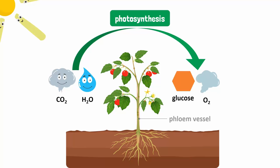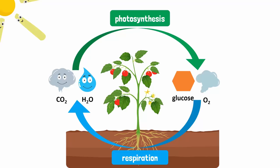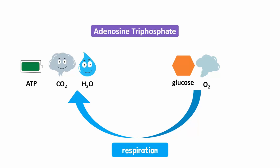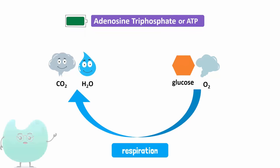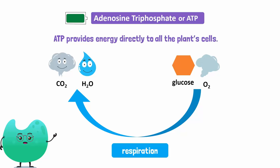When these parts need energy, respiration takes place and the glucose is broken down by oxygen. This reaction releases carbon dioxide and water. The energy is stored in special molecules called adenosine triphosphate, or ATP molecules. ATP provides energy directly to all the plant cells.